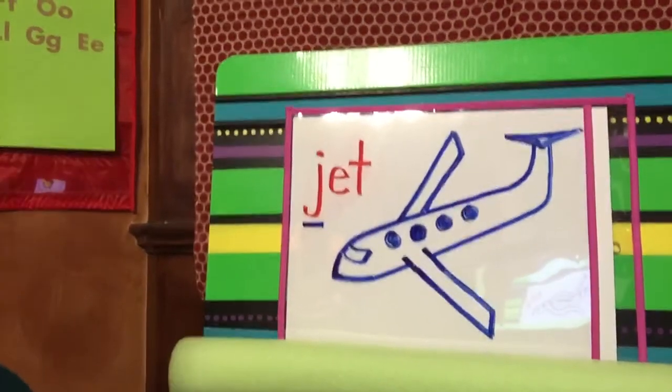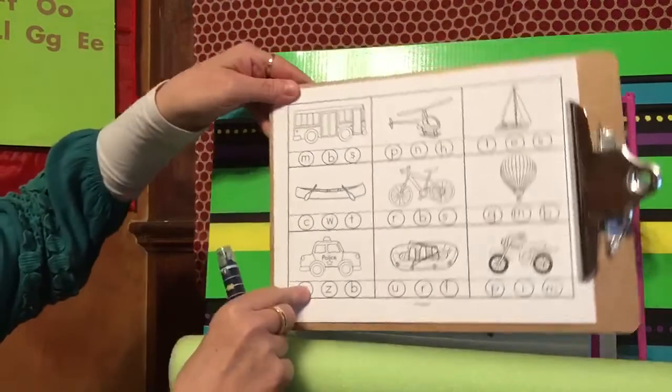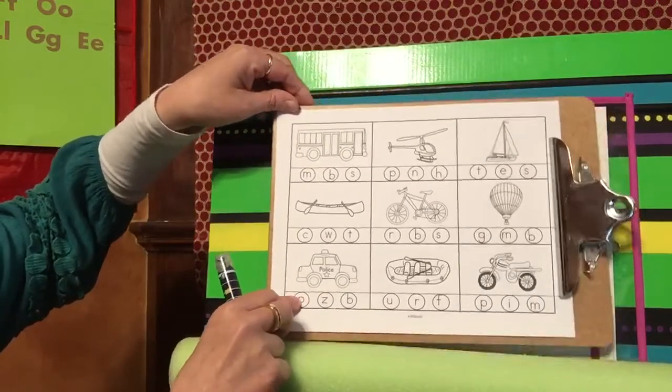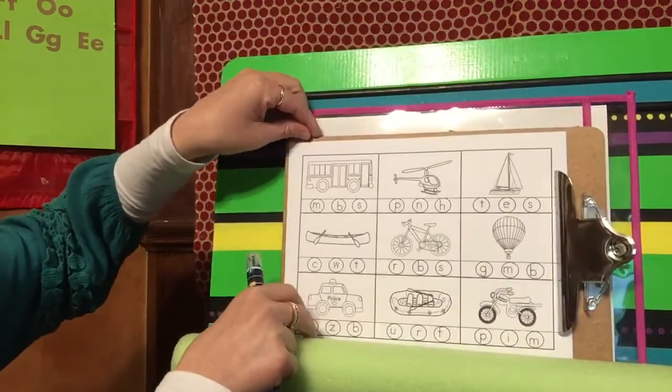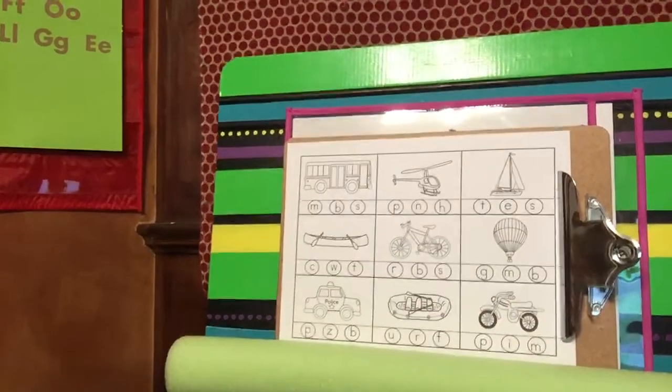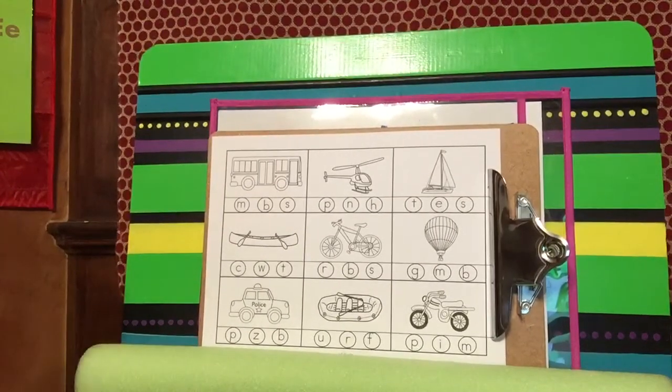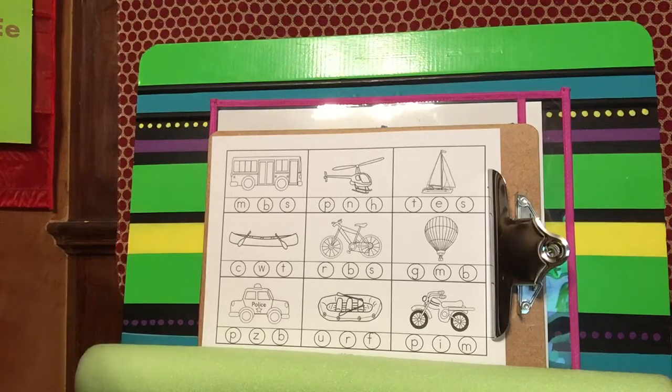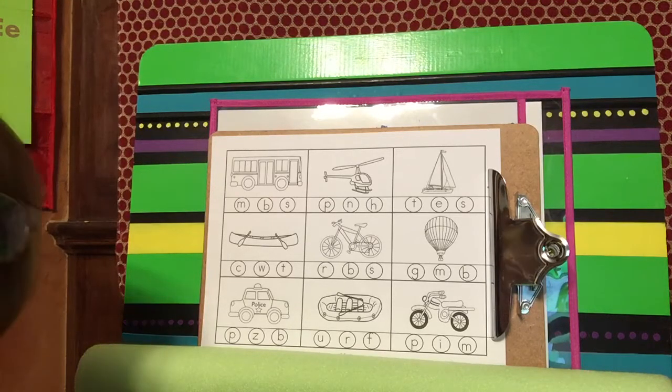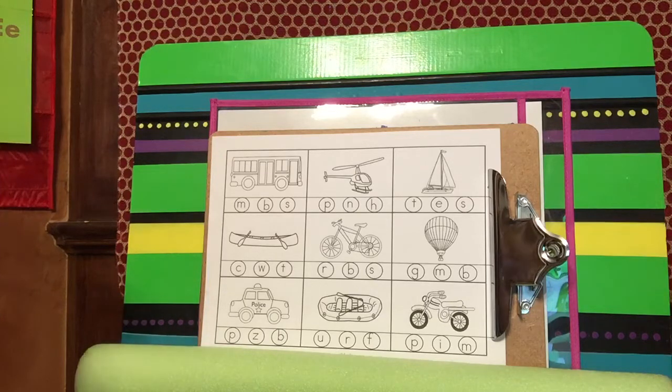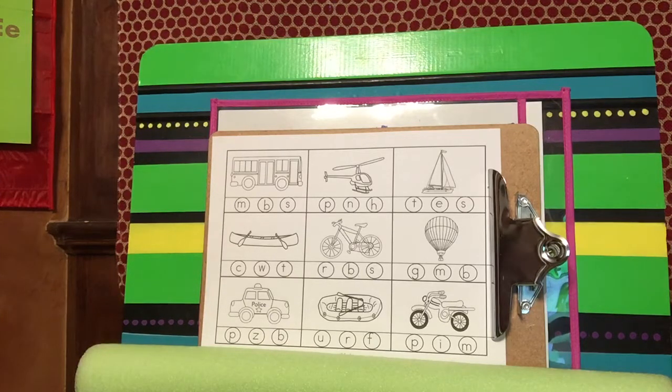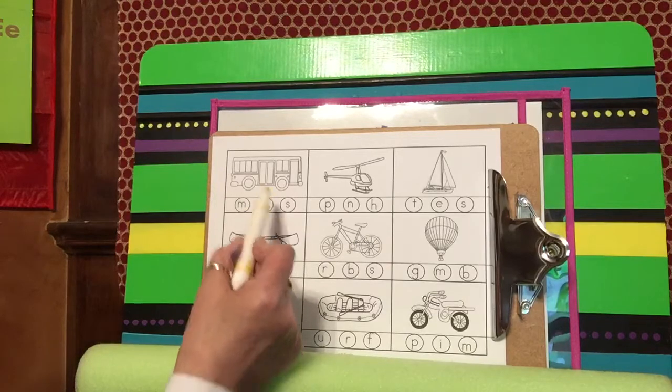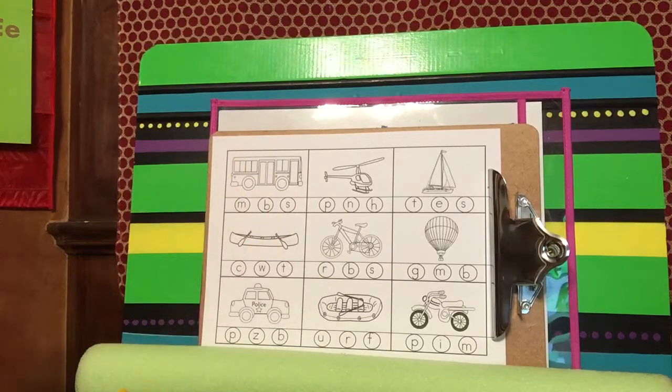What we're going to do today is practice alliteration, finding those initial sounds in the words. We're going to do it together. Look at all these different types of transportation. I bet you recognize all of them, and maybe some of them you've even traveled on, like this one right here. I know we've all been on one of these because we do our bus drills.